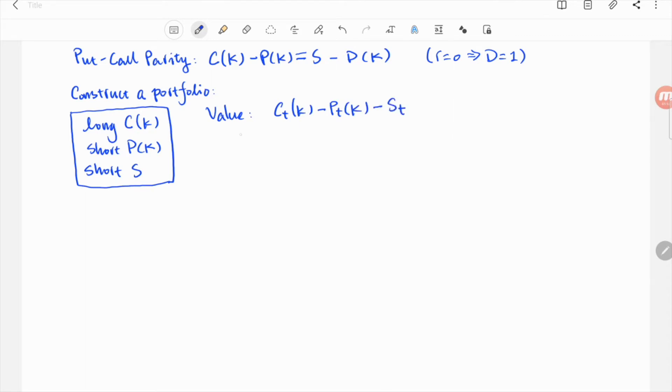At time zero when we enter, the dollar value is as follows. And at maturity, we have C_T minus P_T minus S_T.